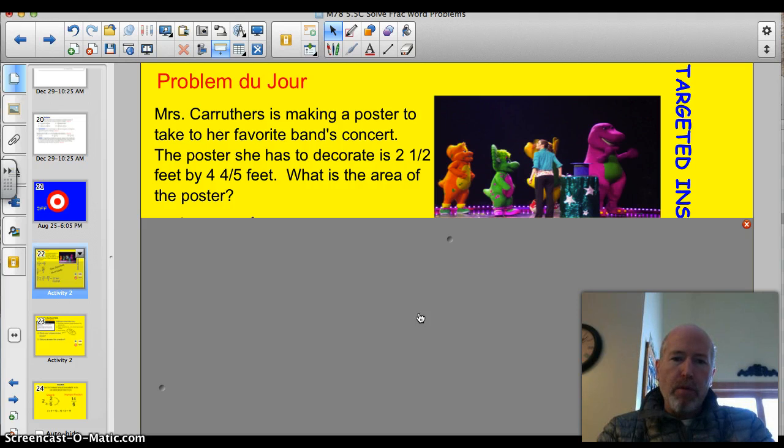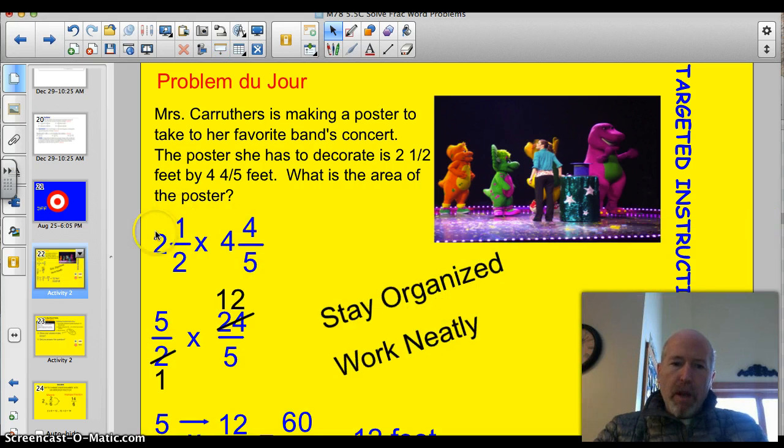Mrs. Carruthers is making a poster to take to her favorite band's concert. The poster she has to decorate is 2.5 feet by 4 and 4 fifths feet. What is the area of the poster? Actually, here's a picture of Mrs. Carruthers at her favorite concert. You'll see it's Barney Live. She's on stage, actually. This is just a really important moment in her life. But, back to reality here. How do you solve this? We're trying to find the area of this. Well, let's just go ahead and set it up. We have 2.5 feet by 4 and 4 fifths feet.